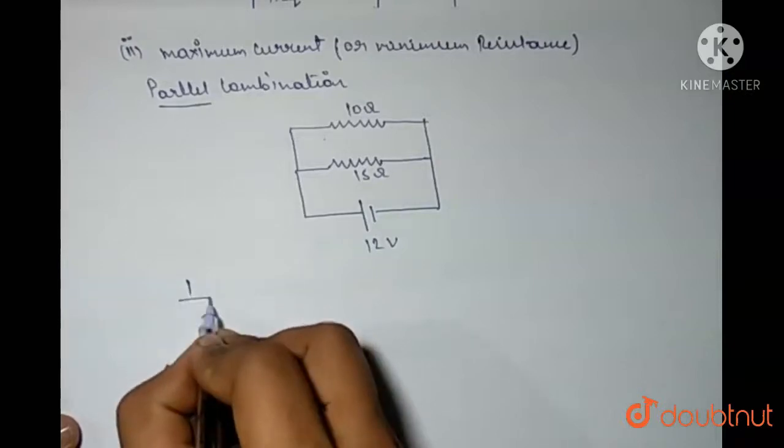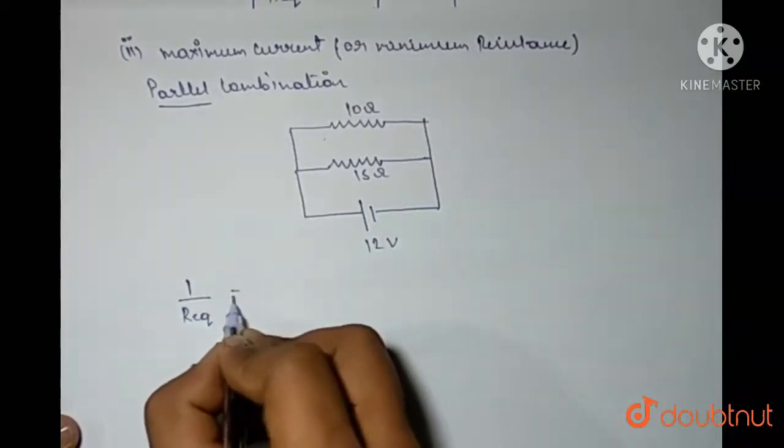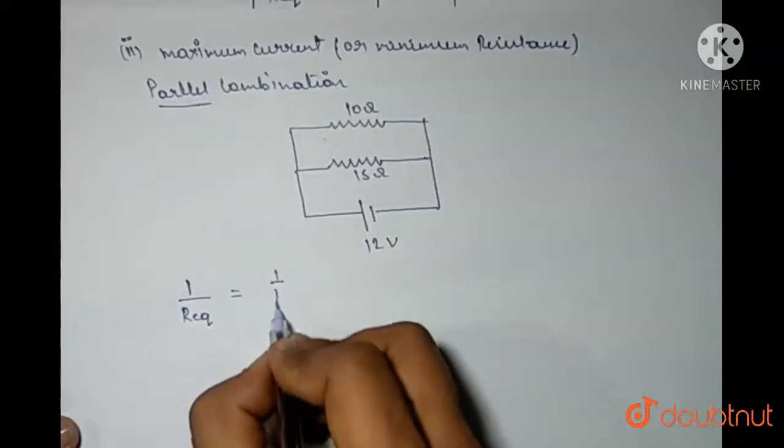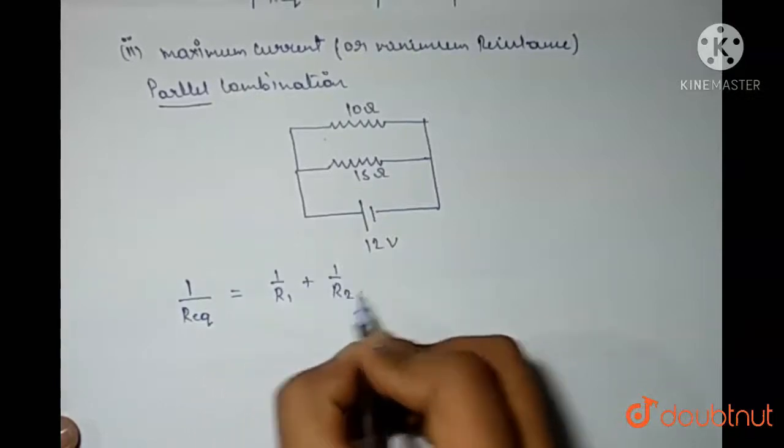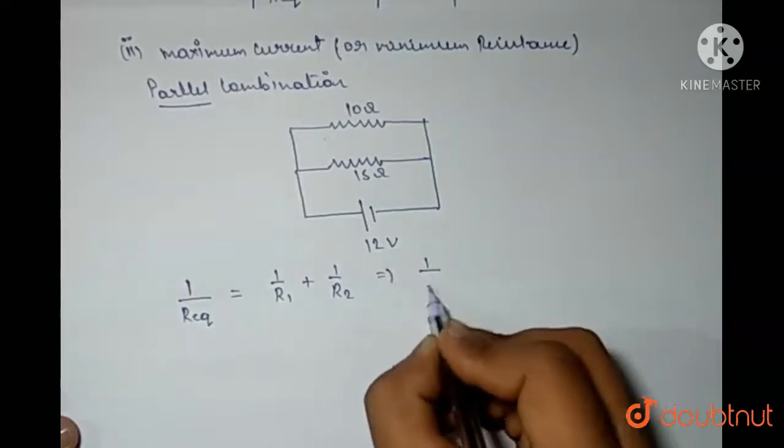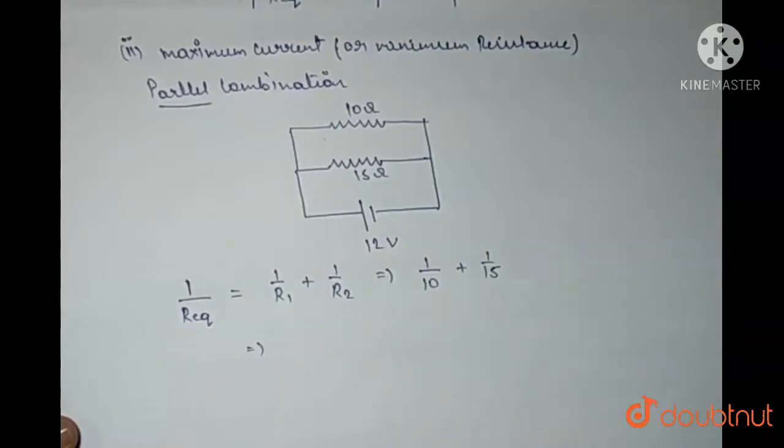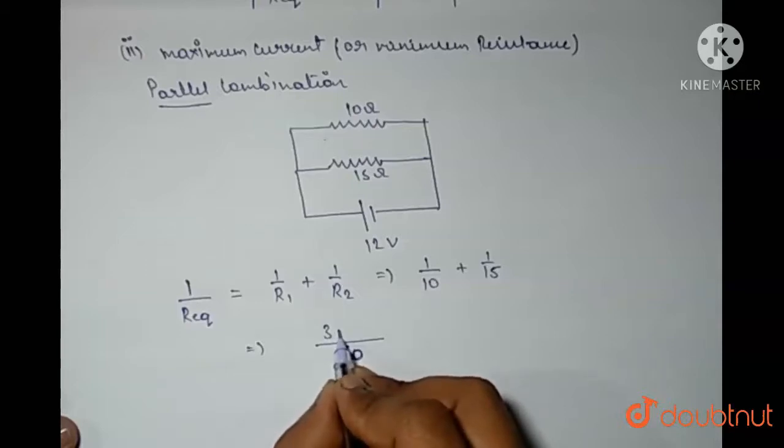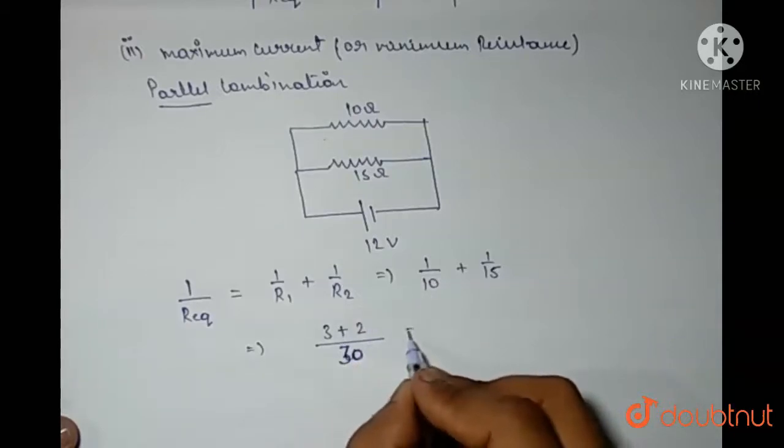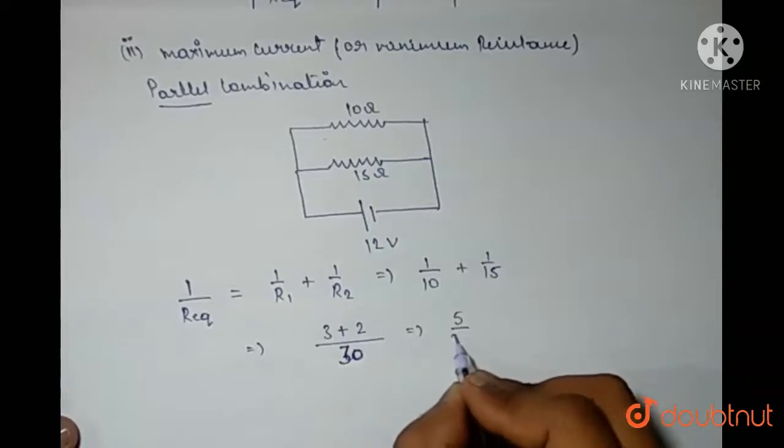So the R equivalent in the case of parallel is equal to 1 upon R1 plus 1 upon R2, which is 1 by 10 plus 1 by 15. So here, taking LCM 30, it is 3 and here it is 2, which equals 5 by 30. And R equivalent equals to 6.